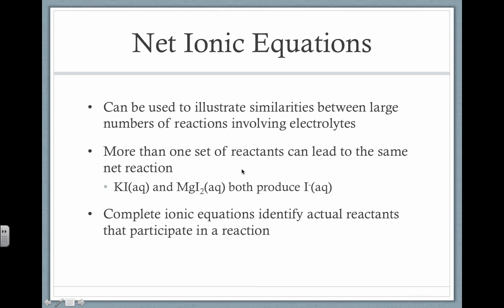The purpose of net ionic equations is that they can illustrate differences between electrolytes. We can also have more than one reaction give us the same net ionic equation, so sometimes we can substitute in different aqueous compounds if they have a common ion — for instance, substituting KI with magnesium iodide since both produce iodide anions. You'll have to be able to do this on the AP Chemistry exam, so it's something we're going to spend a lot of time on.